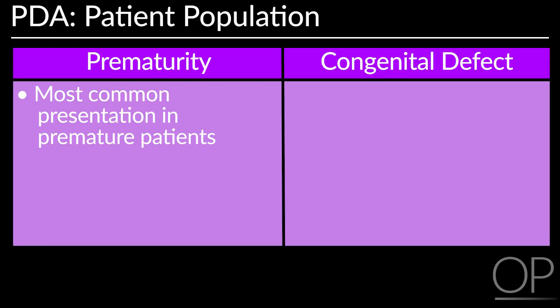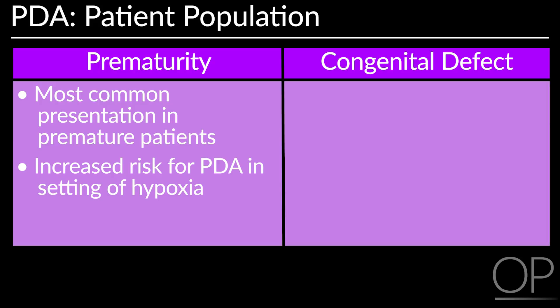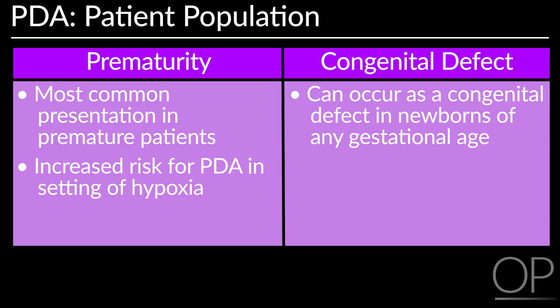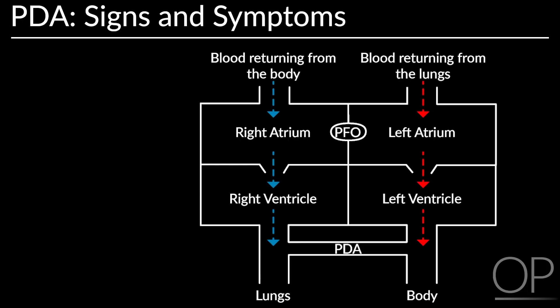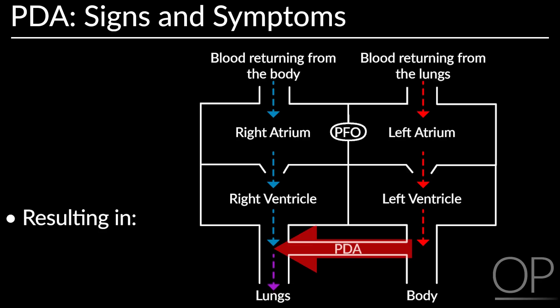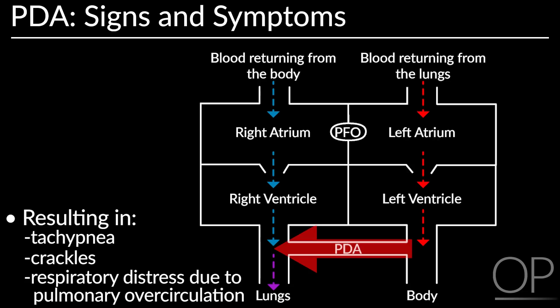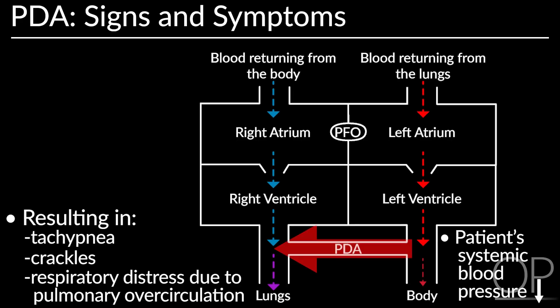PDA is most common in premature patients, and there is also an increased risk in settings of hypoxia. PDA can also occur as a congenital defect in newborns of any gestational age, where it is often associated with more complex congenital heart disease. In preterm infants, blood is typically shunted through the PDA from left to right, increasing blood flow to the lungs and resulting in tachypnea, crackles, and respiratory distress due to pulmonary over-circulation. Consequently, blood flow to the body decreases and systemic blood pressure decreases.